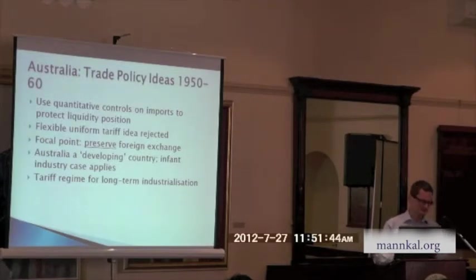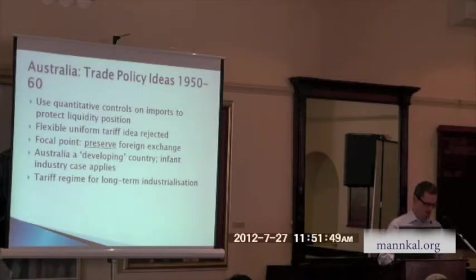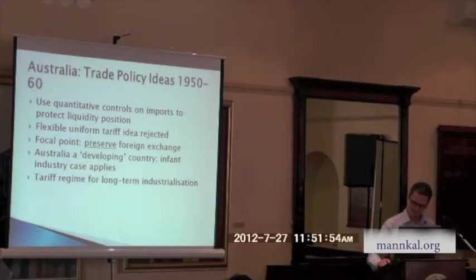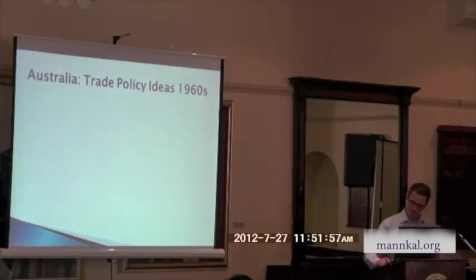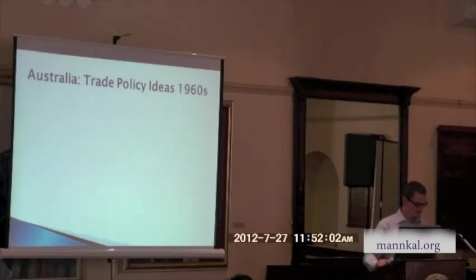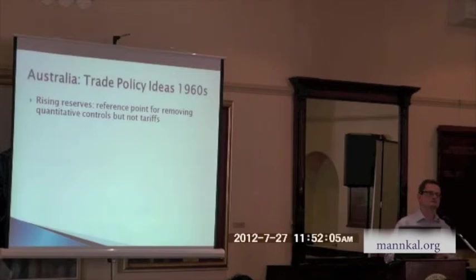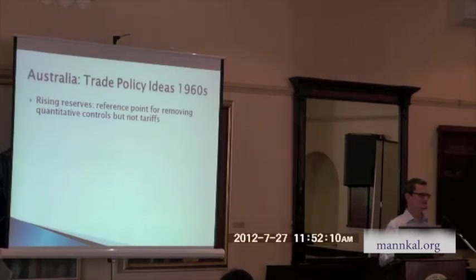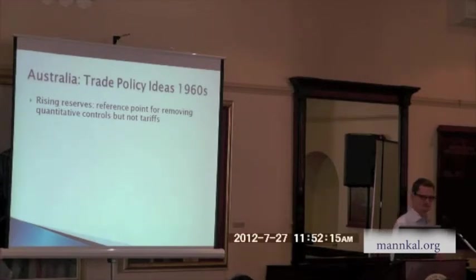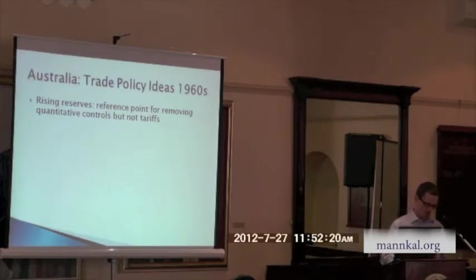In the 1950s, the idea of freer trade was rarely considered — it was readily sacrificed with the onset of a liquidity problem and the foreign exchange constraint in the minds of the officials. In the 1960s, the mainstream line shifted somewhat. Rising reserves in the 1960s meant that reference points shifted away from emergency pressure on the Treasurer, and policymakers agreed they could now remove the quantitative controls put on in the 1950s.